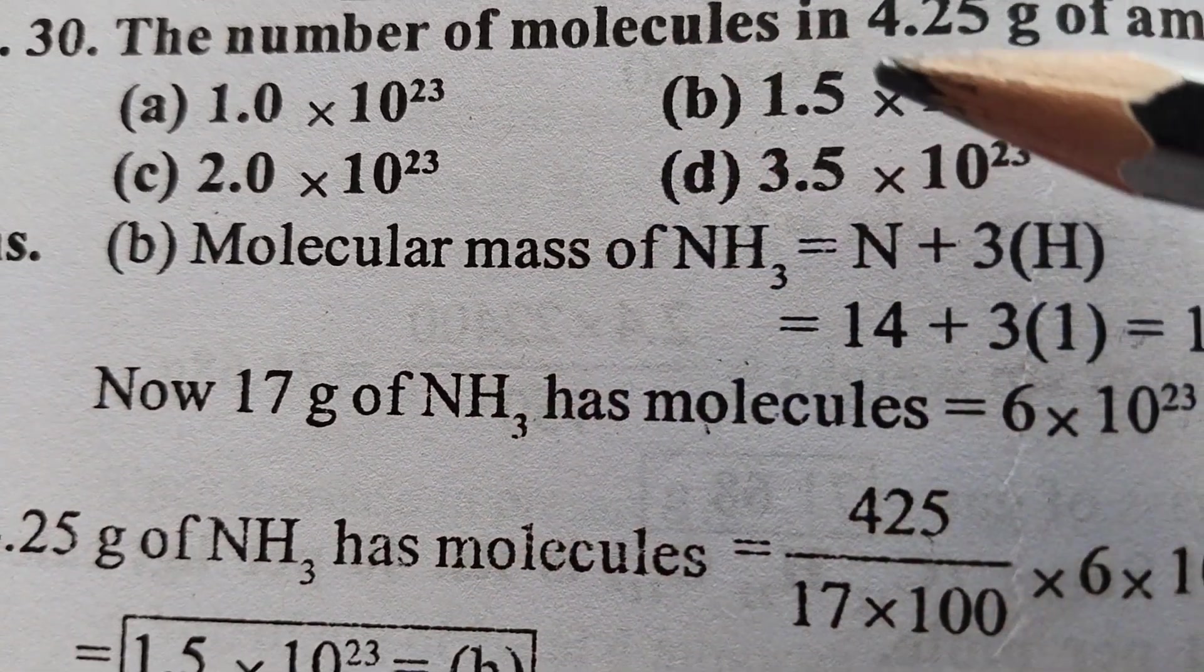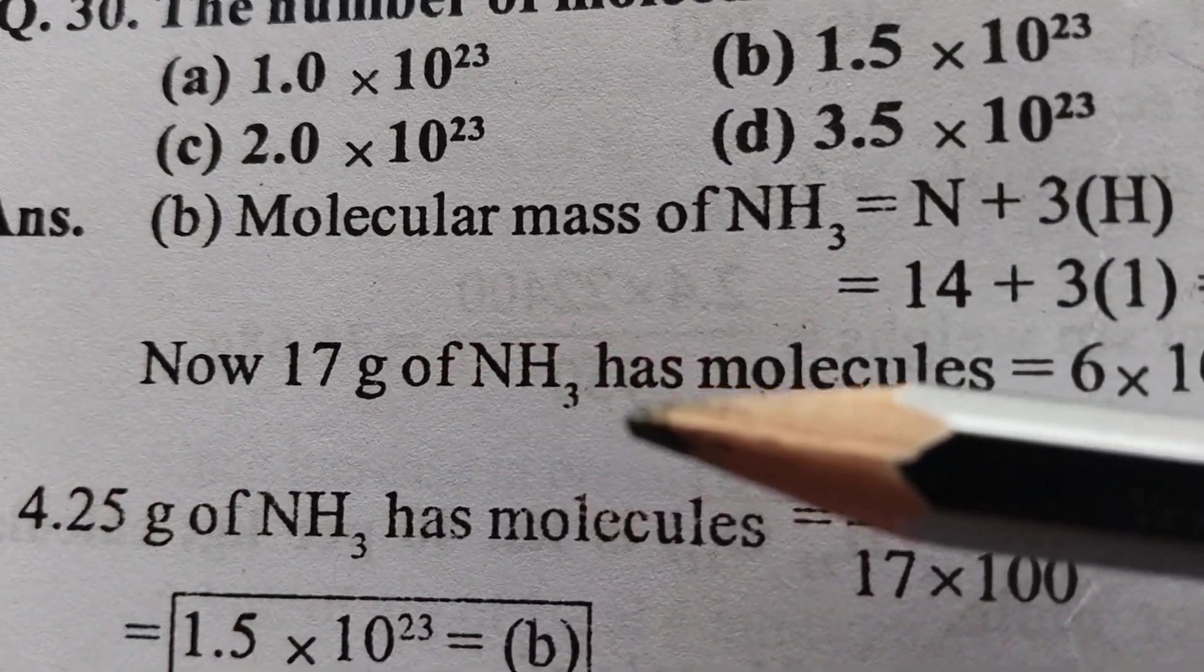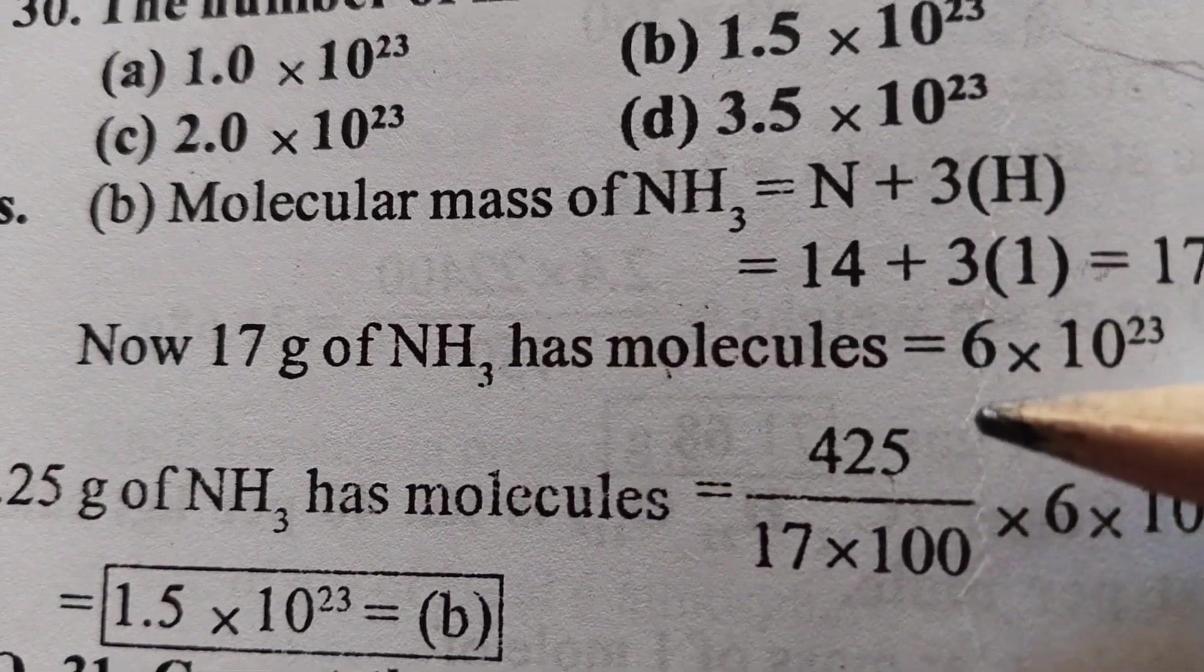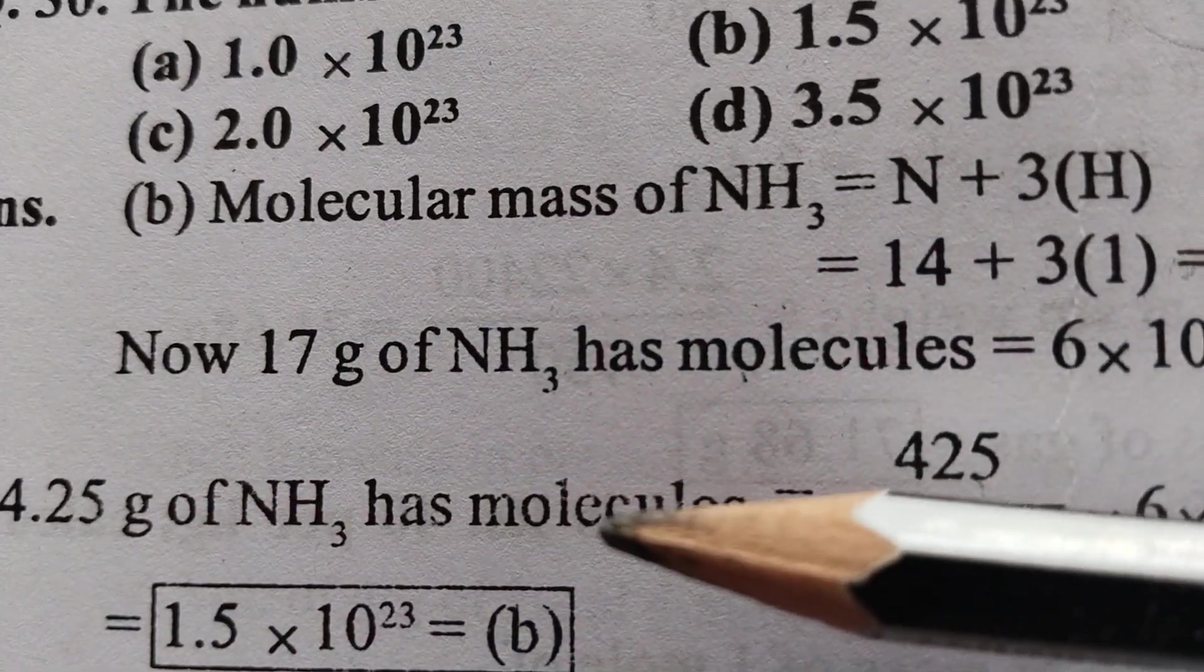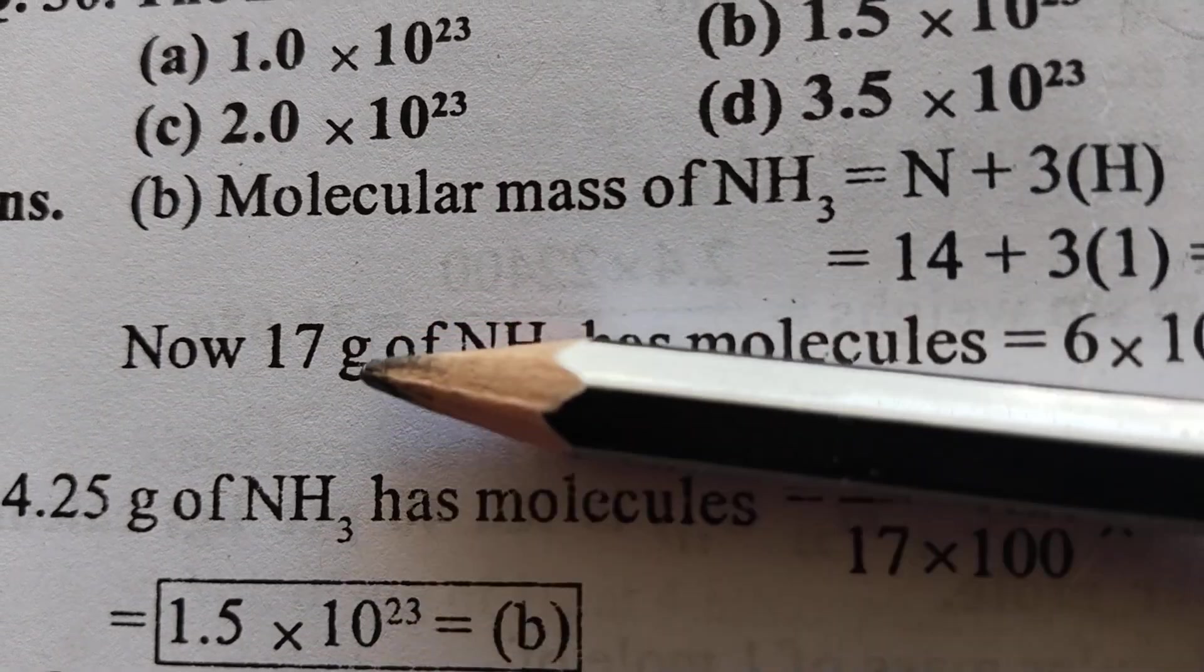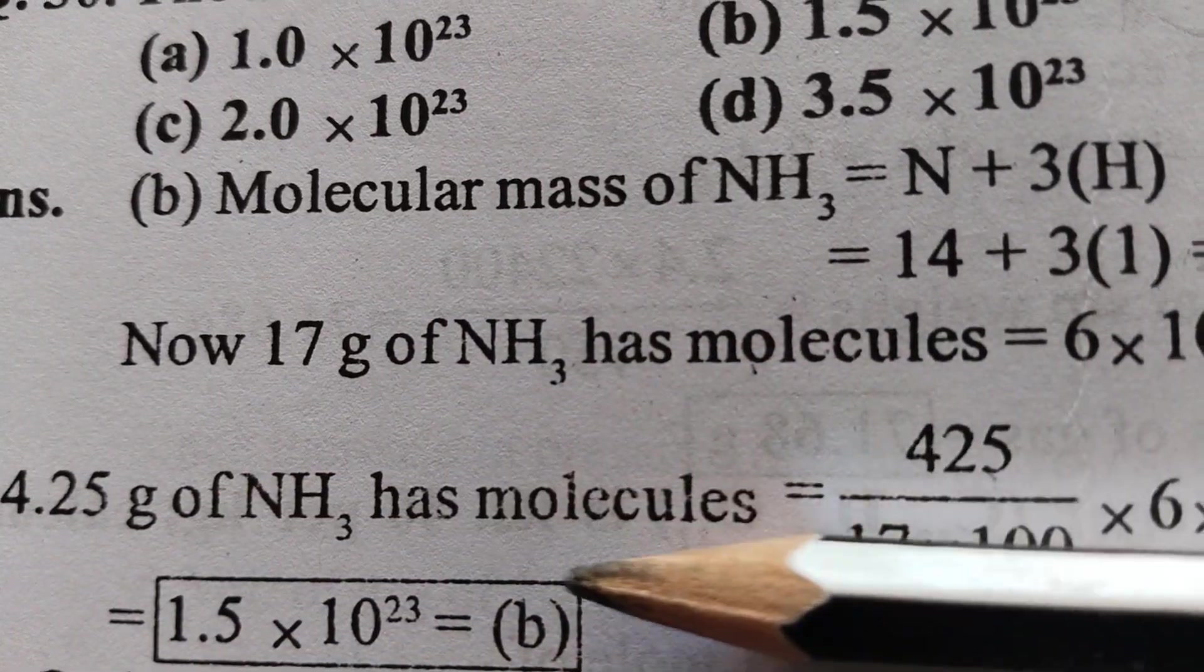What they have asked: the number of molecules in 4.25 grams. So 17 grams of ammonia contains 6 × 10²³. What about 4.25 grams of ammonia? This one: 4.25 grams of ammonia has molecules—